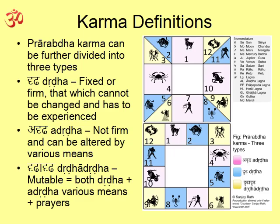The dual Rashis — Gemini, Virgo, Sagittarius, and Pisces — are Dridha-Dridha, meaning they have a certain amount of fixed karma and a certain amount of movable karma. So I can call these movable karmas, fixed karmas, and dual karmas — simple as that. These three types correspond to the three types of Rashis.